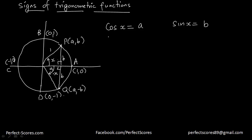From here, the value of cosine of x is equal to a. For cosine of negative x, it's still base over hypotenuse — the base is still a and the hypotenuse is 1 — so cosine of negative x is also equal to a.